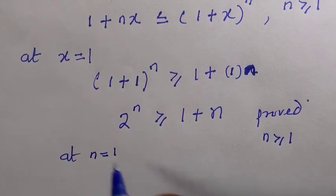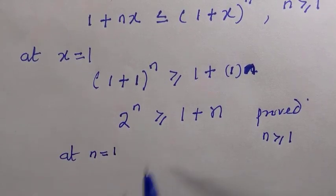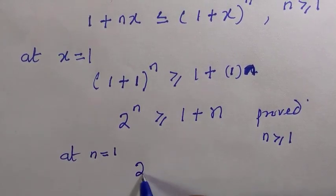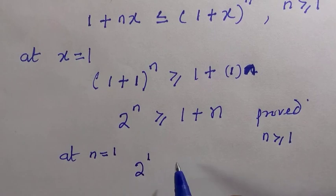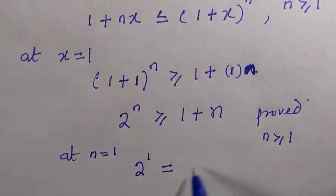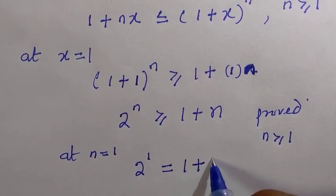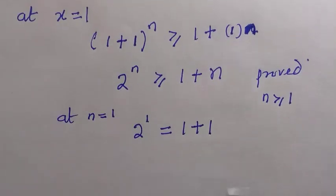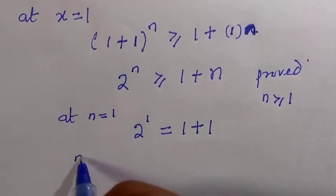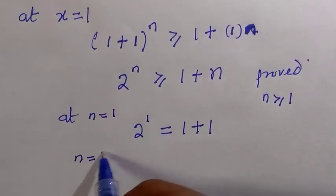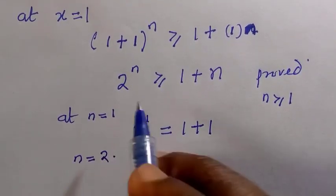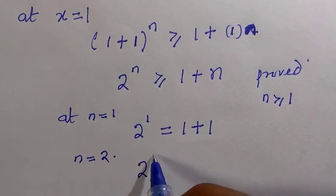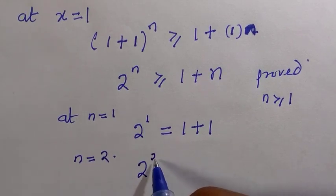So we can now start checking: suppose n equals to 1, we have 2 raised to power 1, and this is equals to 1 plus 1. So that is the essence of the equals to in that problem — at n equals to 1, both sides are equal.